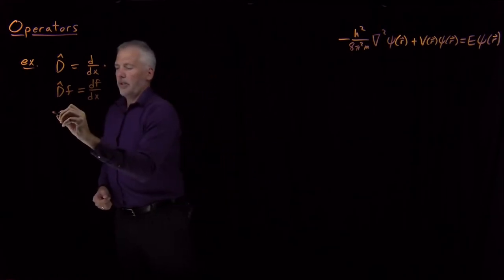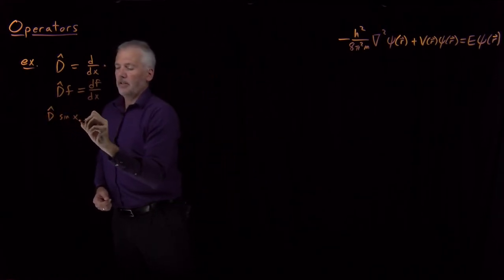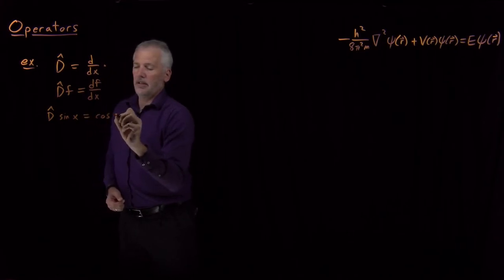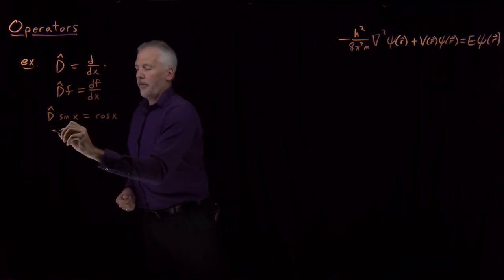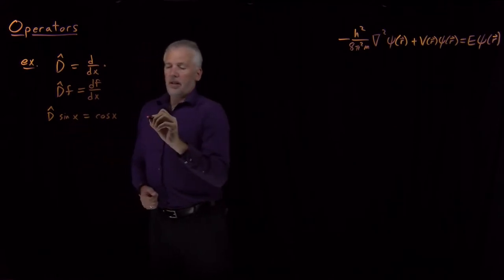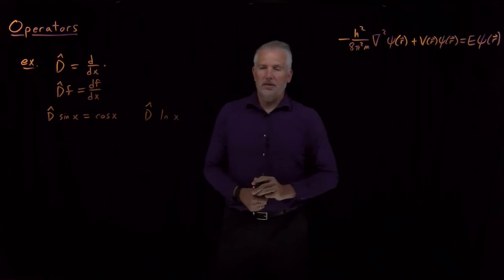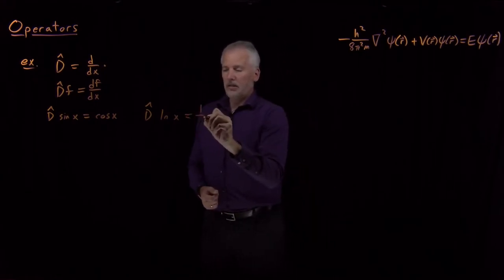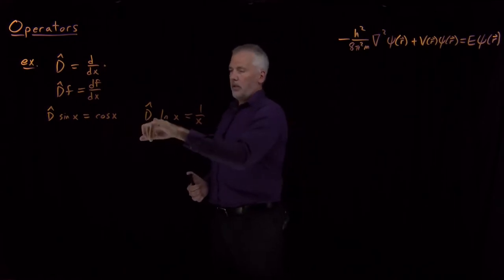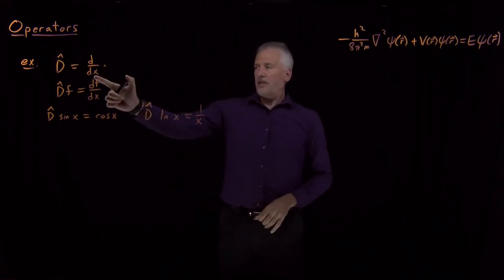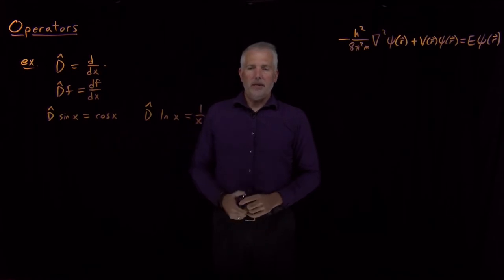We can do a few examples. The derivative operator acting on the function sin(x) gives me cos(x). On the other hand, the derivative operator acting on a different function, log(x), gives me 1 over x — the derivative of log(x). So the operator is the same in both cases, but the result depends on what it is that I'm acting on.